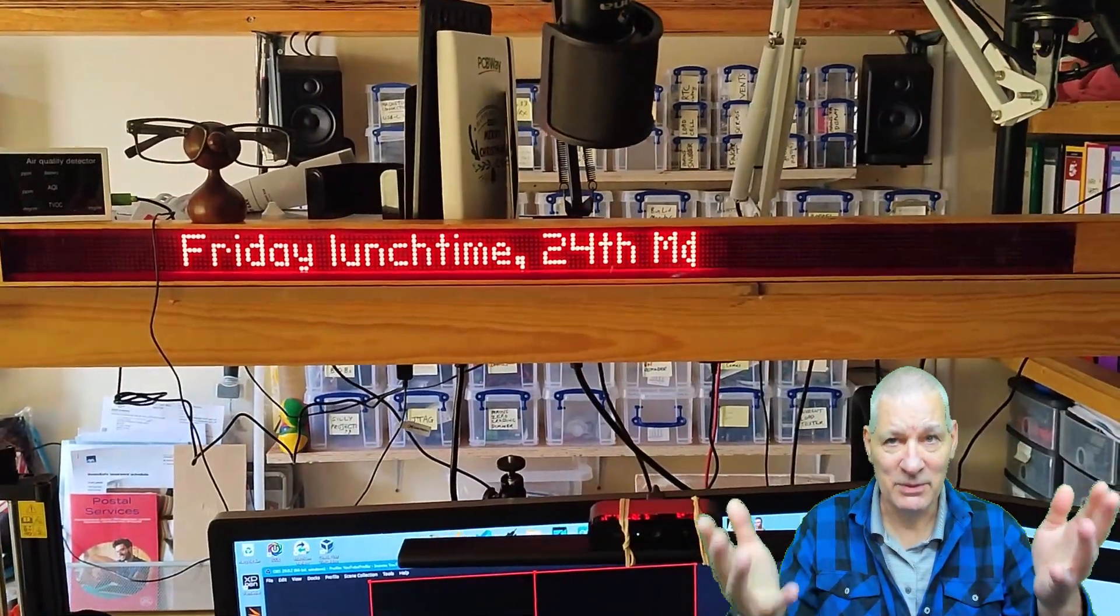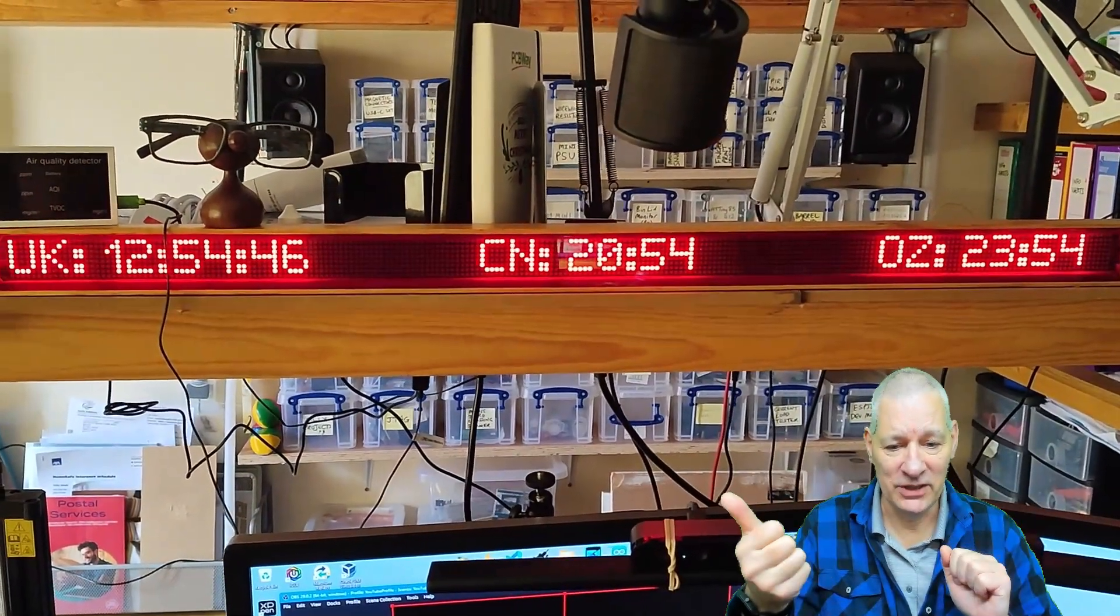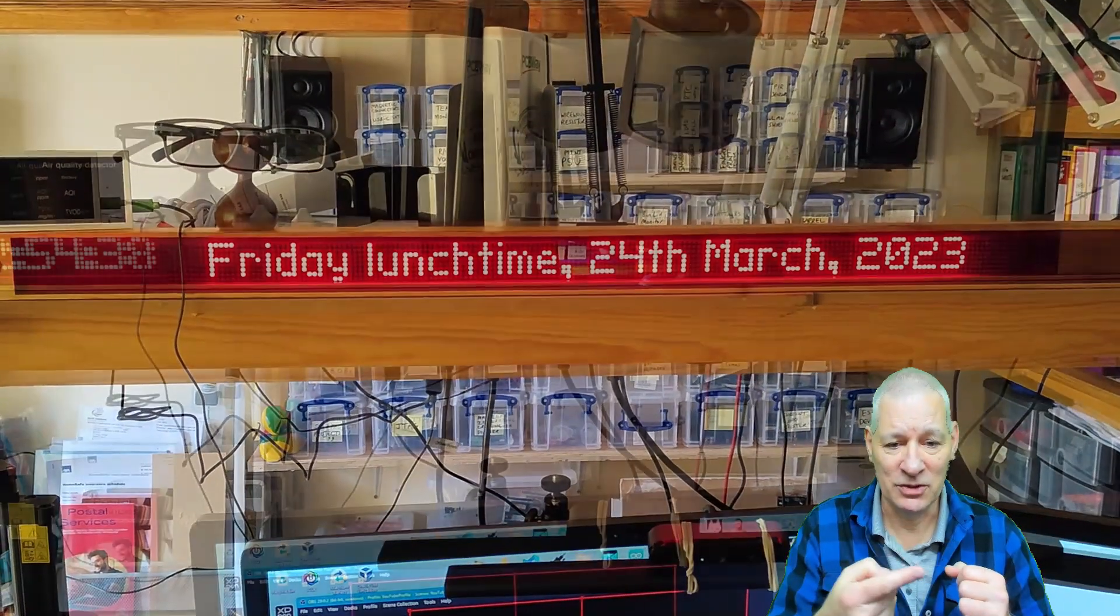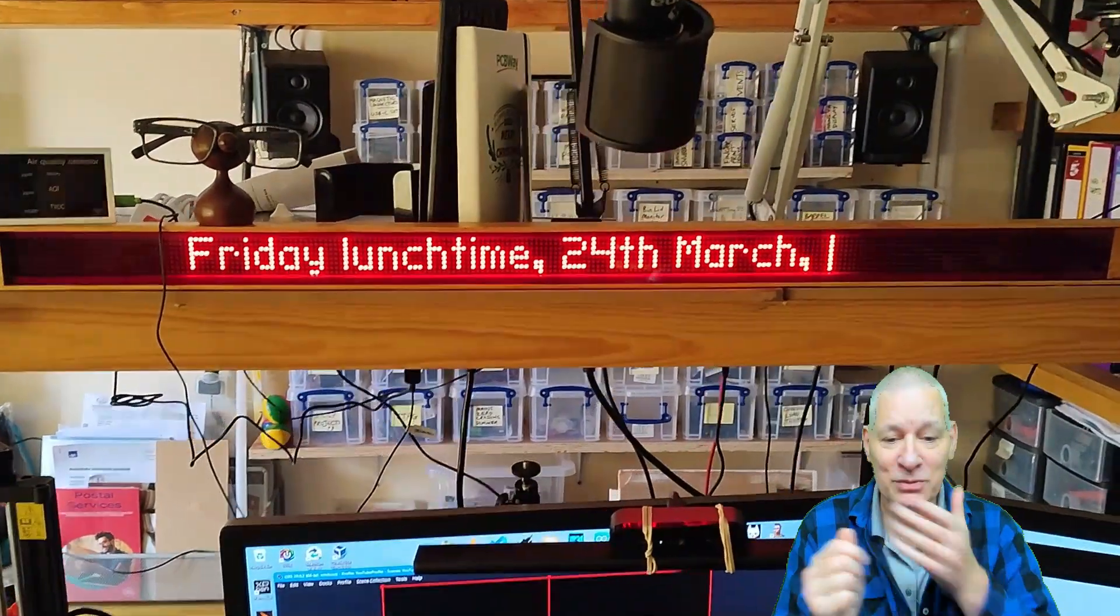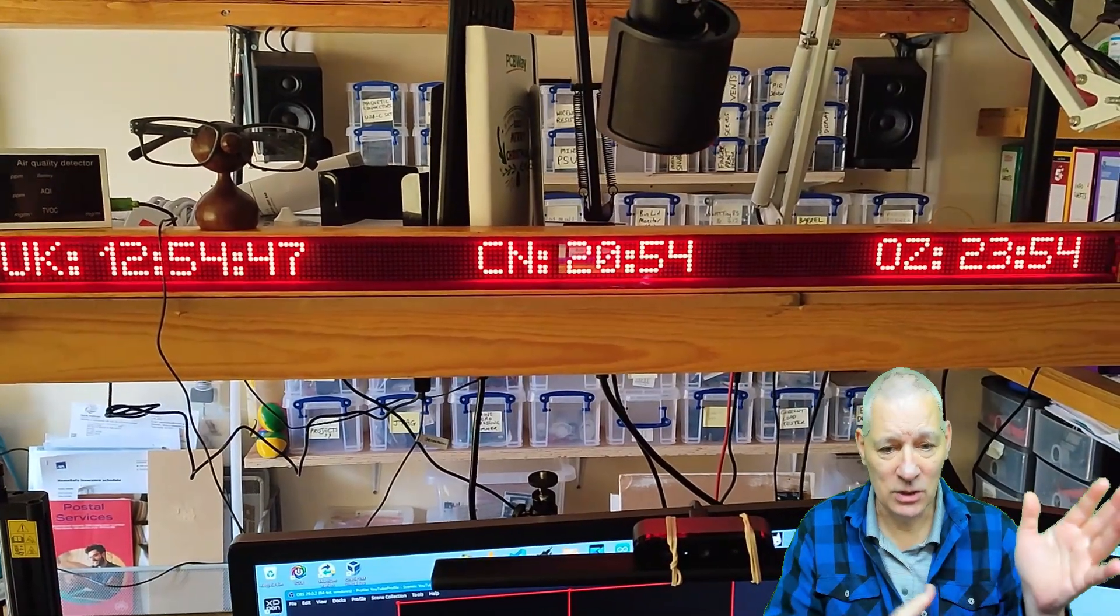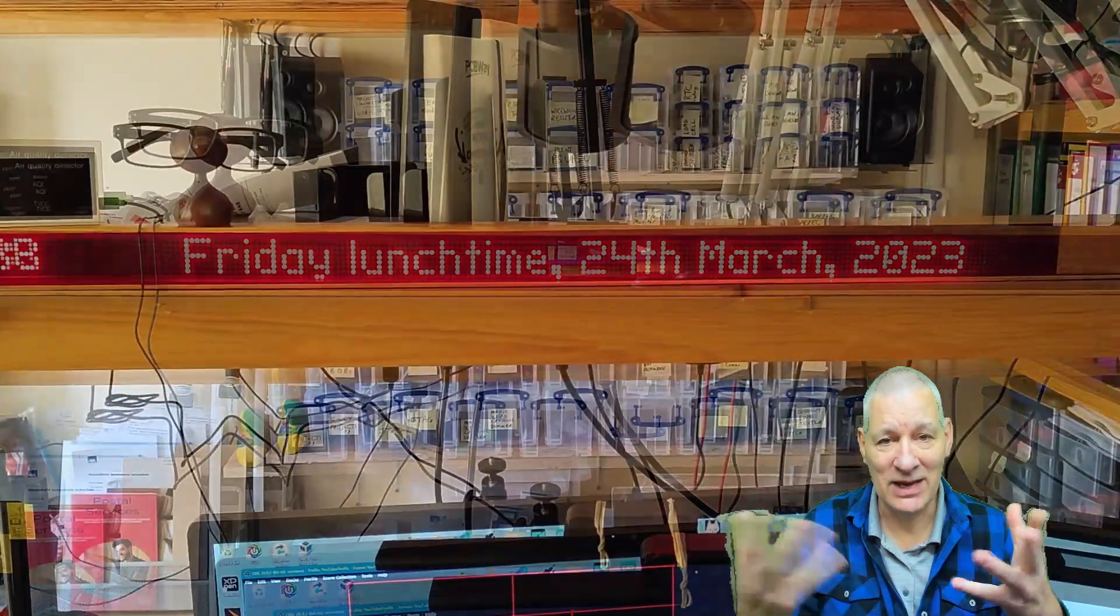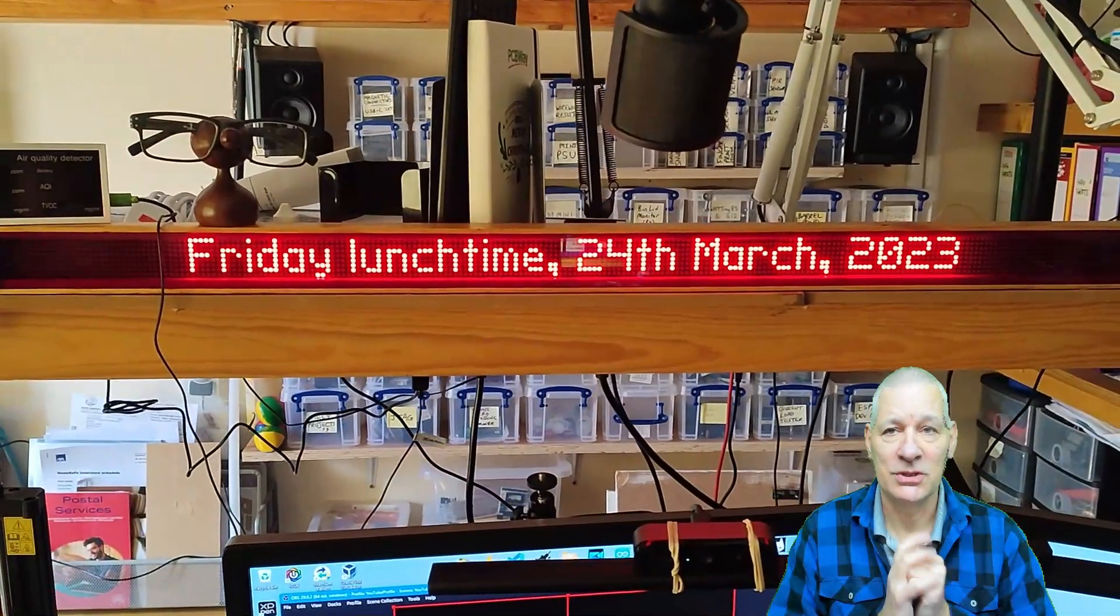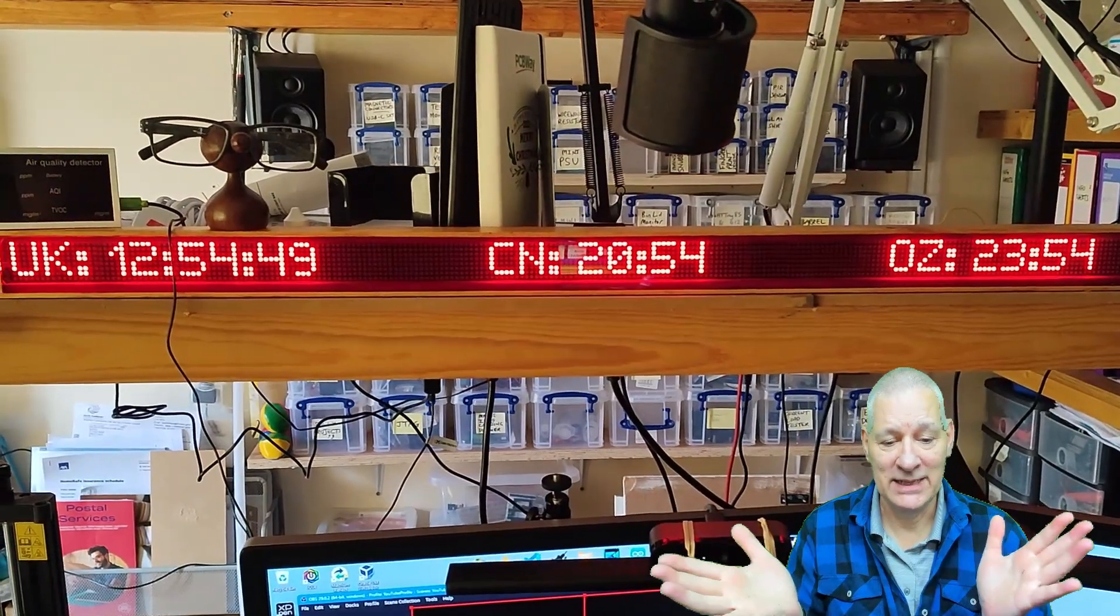I've got the time of day, the day of the week, and three time zones. One for the UK obviously because I live here, one for China so I don't start sending WhatsApp messages to my contacts in China at 11, 12 o'clock at night which I've done before, and Oz because my daughter lives in Australia. They keep changing their times different times to us.